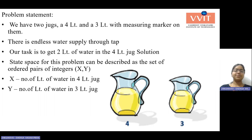How is it possible? For this, let us consider one ordered pair x and y, where x is the number of liters of water in the 4-liter jug and y is the number of liters of water in the 3-liter jug.